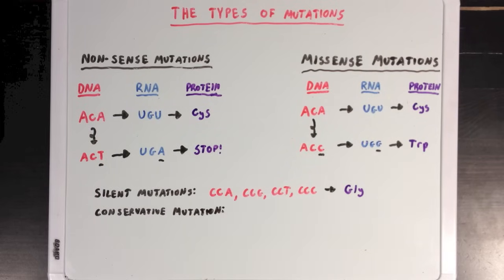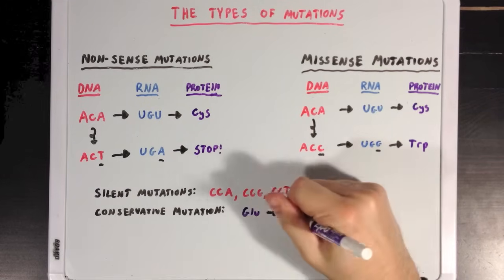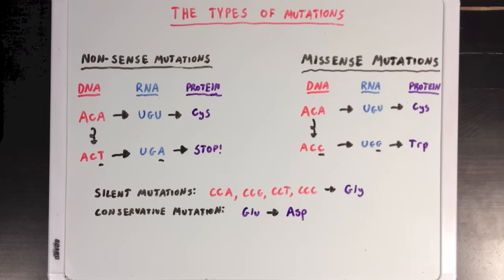Conservative mutations are where the new amino acid is of the same type as the original. So here I have a glutamate and an aspartate, which are both acidic amino acids. So a mutation that swapped out an aspartate for a glutamate would be a conservative mutation.